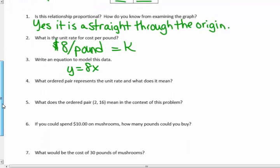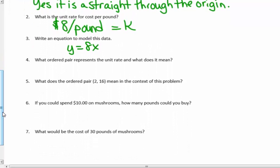What ordered pair represents the unit rate and what does it mean? 1. When X is 1. 1 pound of mushrooms costs $8.